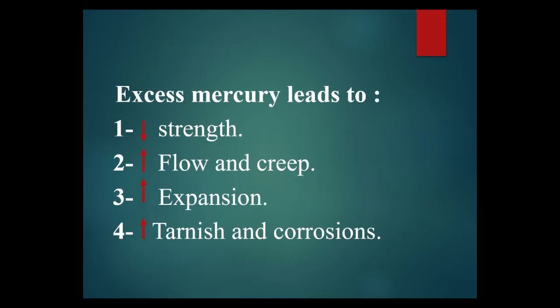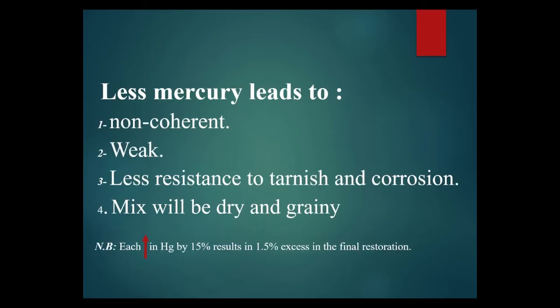Excess mercury leads to decreased strength, increased flow and creep, increased expansion, and increased tarnish and corrosion. Less mercury leads to non-coherent amalgam restoration, weak amalgam restoration, and less resistance to tarnish and corrosion. The mix will be dry and grainy. Each increase in mercury by 1% results in 1.5% excess in the final restoration.